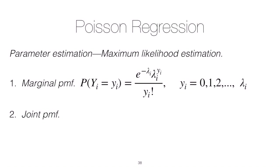So the joint, which I might call f of y, which is a vector, and we have a parameter vector lambda—so that vector includes lambda 1, 2, 3, etc.—this will just be the product from i equals 1 up to n of e to the negative lambda i times lambda i to the y i over y i factorial.